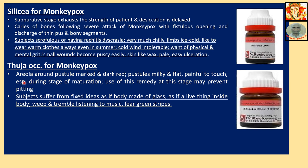Thuja occidentalis for monkeypox: areola around pustules marked and dark red, pustules milky and flat, painful to touch, especially during the stage of maturation. Use of this remedy at this stage may prevent pitting. Subject suffers from fixed ideas — as if the body is made of glass, as if there are living things inside the body. Weeps and trembles listening to music. Fear, various types. These are the general symptoms.